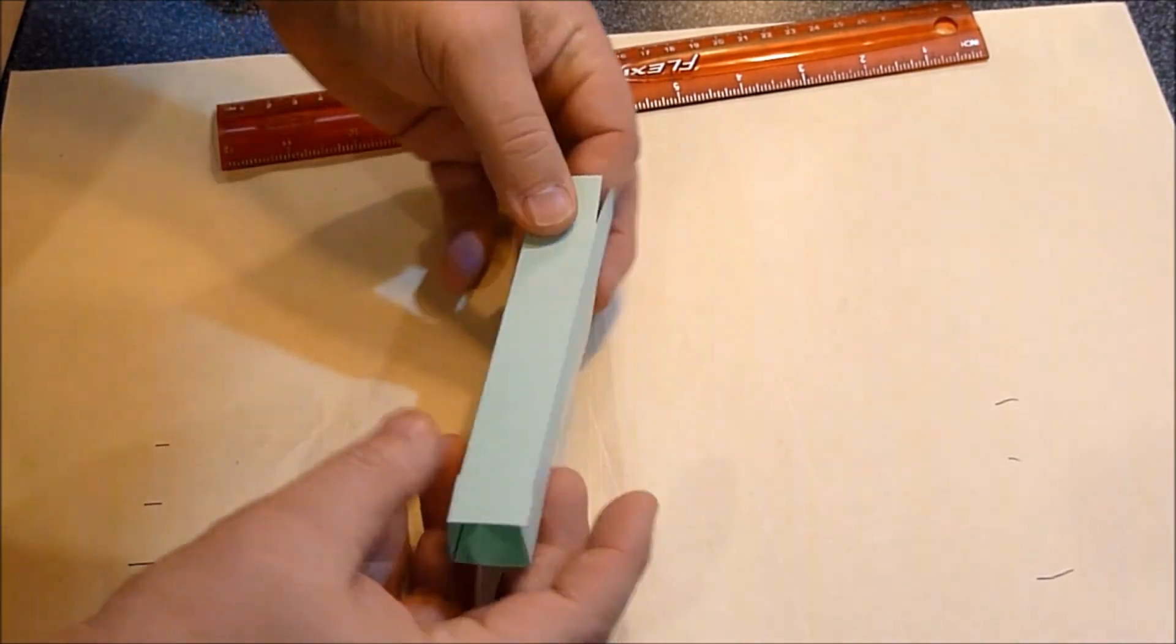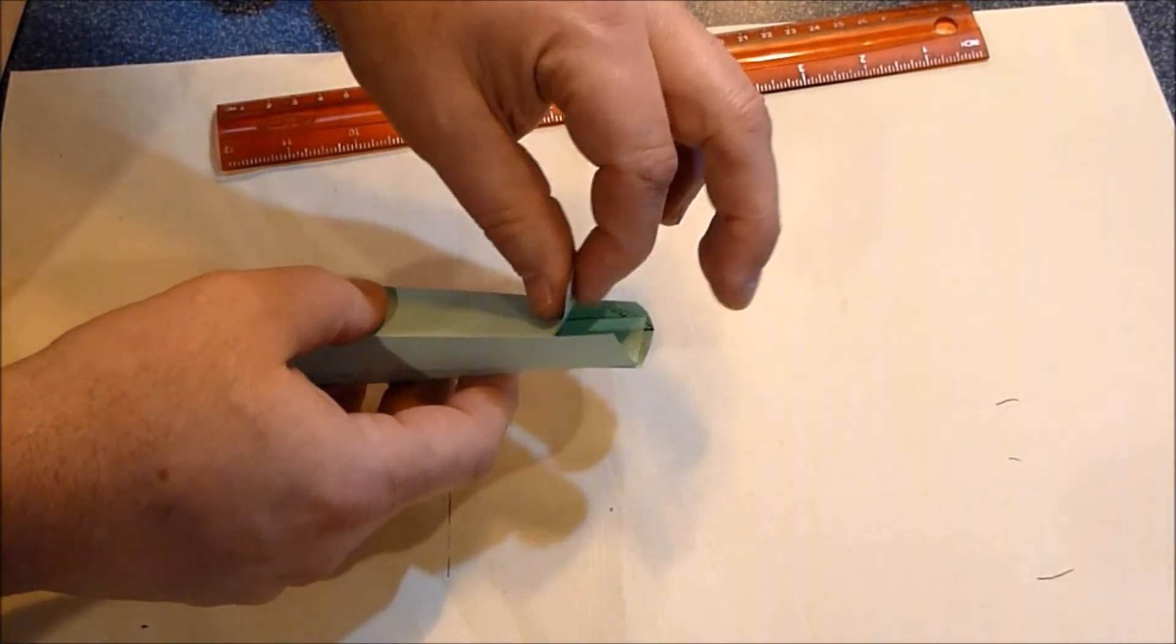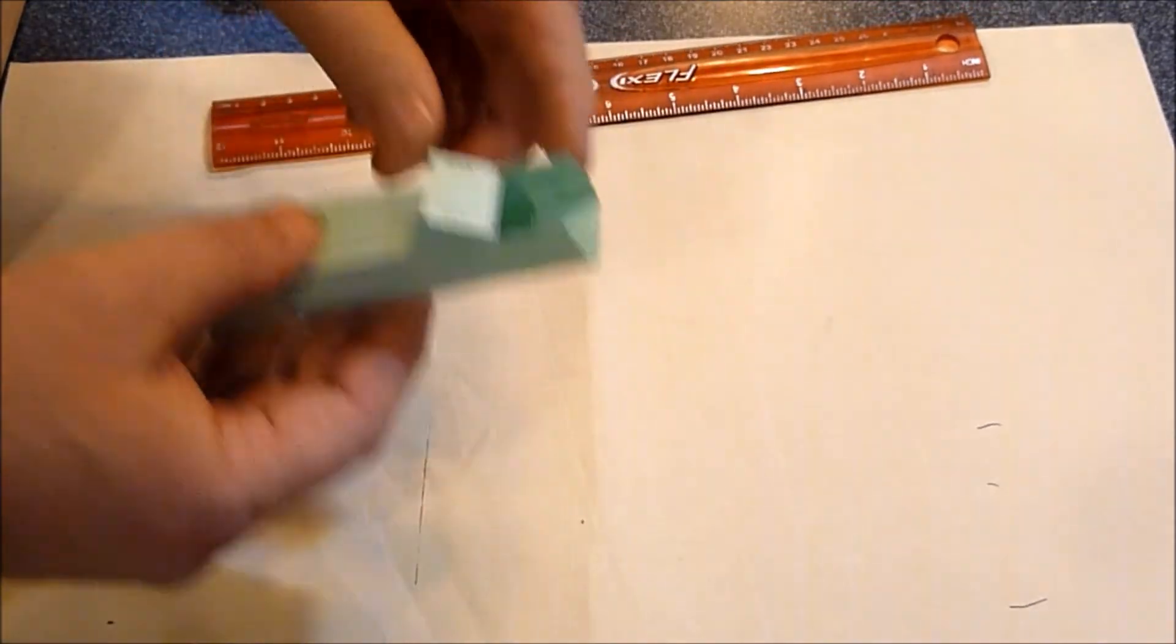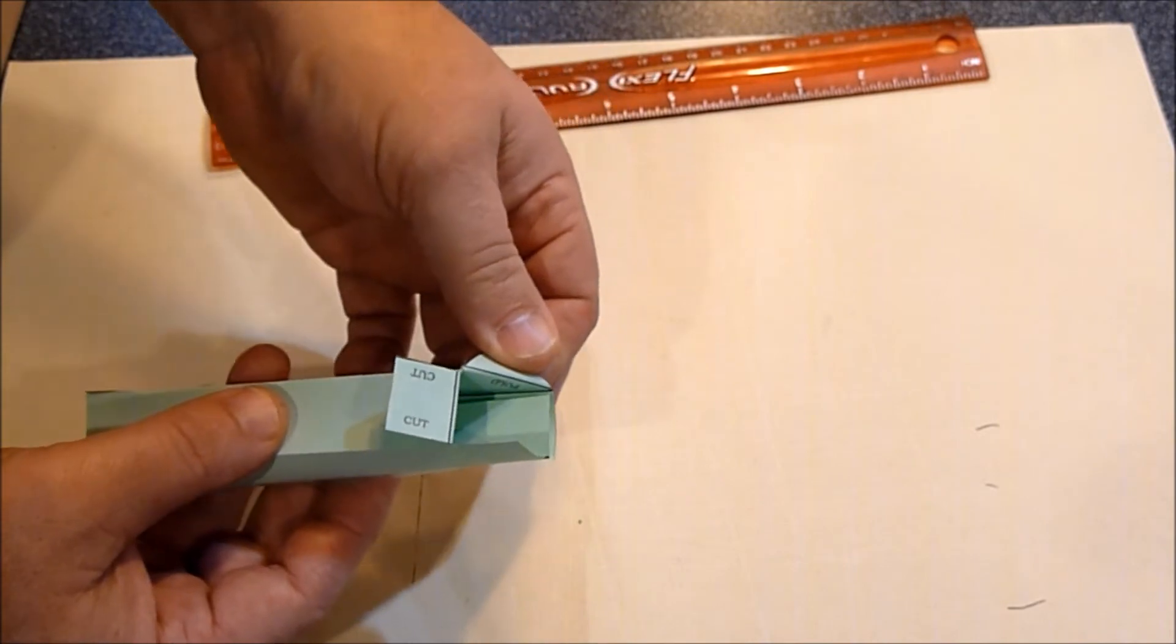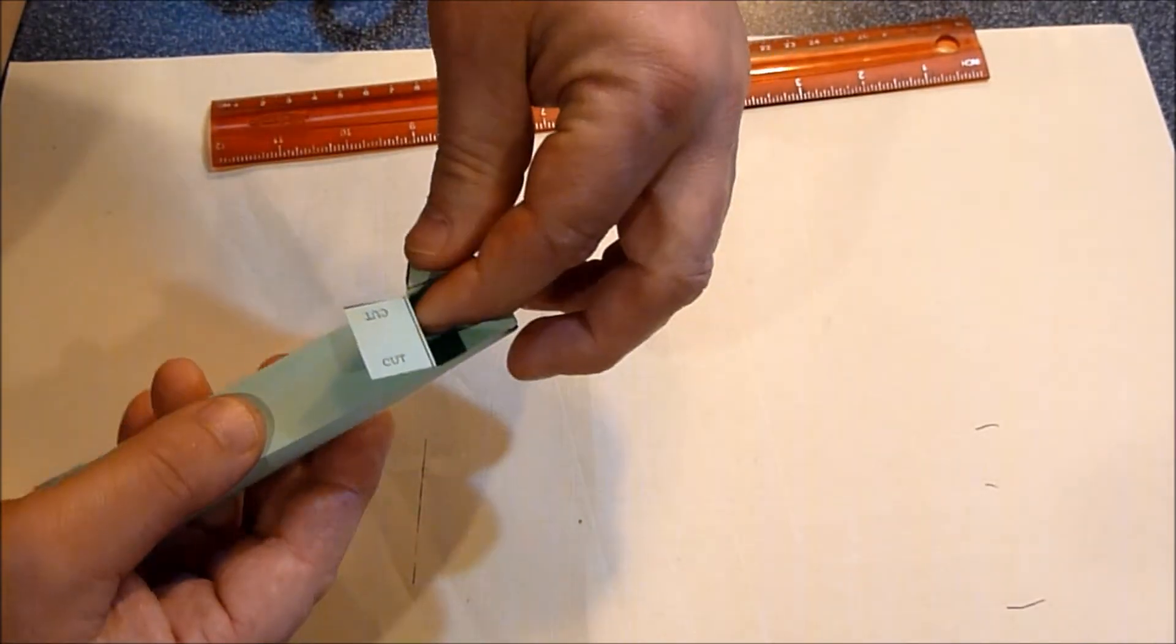And then the folding is really important. So on one side, you're going to fold out this tab like that. But if you look, you can see on the inside, you're going to fold out the inside triangles too.